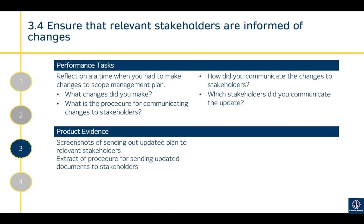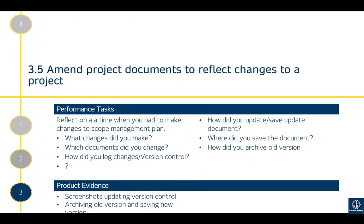Reflect on the time you had to make changes to the scope management plan: what changes did you make, what is the procedure for communicating changes to stakeholders, how did you communicate the changes, and which stakeholders did you communicate to? Product evidence would be screenshots sending the updated plan to relevant stakeholders, an extract of your procedure from the project management plan for sending updated documents, and possibly version control to show documents have been updated.